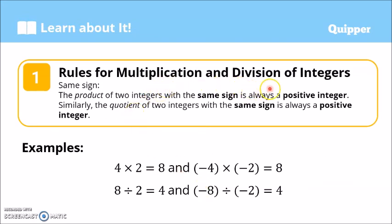Rules for multiplication and division of integers. Just like addition and subtraction, we also have rules of signs for multiplication and division. For same signs, or what we call like signs, the product of two integers with the same sign is always a positive integer. If we multiply integers with the same sign — positive times positive, or negative times negative — the answer is positive. Similarly, the quotient of two integers with the same sign is always a positive integer.